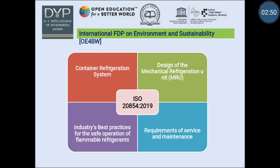Let's see the first ISO standard, ISO 20854-2019. The scope of this standard is limited to container refrigerating systems operated in conjunction with the carriage of refrigerated cargo. This document describes the design of mechanical refrigeration units and operation of container refrigerating systems in all anticipated operational modes and locations. It also describes the industry's best practices for safe operation of flammable refrigerants and requirements for service and maintenance when working with flammable refrigerants.